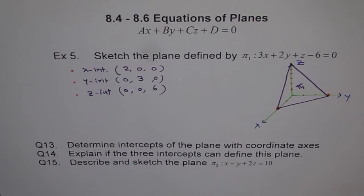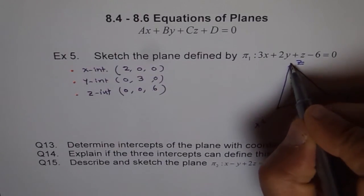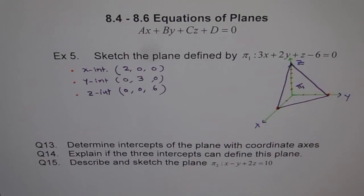Now, here are 3 questions related with this example. Question 13. Determine intercepts of plane with coordinate axes. The coordinate axes are x, y, and z. So, let me just push it more. Explain if the 3 intercepts can define this plane. And that's a question for you, a communication question. Can 3 intercepts define this plane?